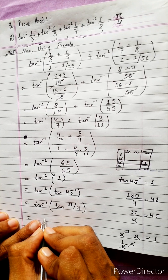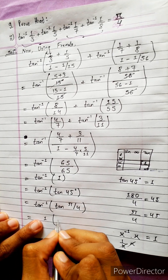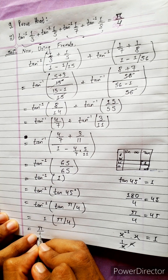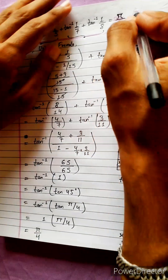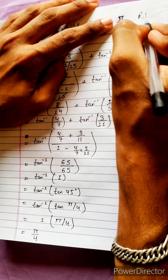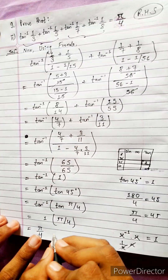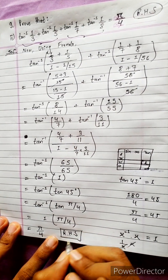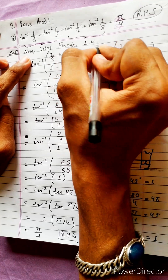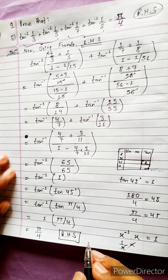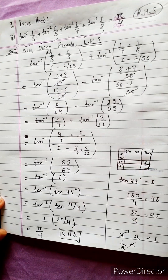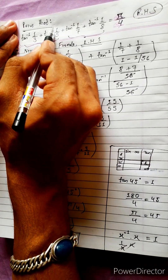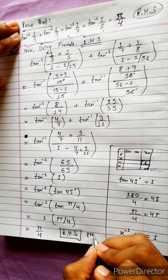So we can write 1 into pi by 4, which equals pi by 4. This is our right hand side. Solving the left hand side, we got the right hand side. Hence proved. Bye bye.